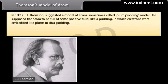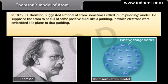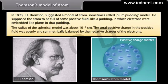In 1898, J.J. Thomson suggested a model of the atom, sometimes called the plum pudding model. He supposed the atom to be full of some positive fluid, like a pudding, in which electrons were embedded like plums. The radius of the spherical model was about 10 raised to the power minus 8 cm. The total positive charge in the fluid was evenly and symmetrically balanced by the negative charges of the electrons.